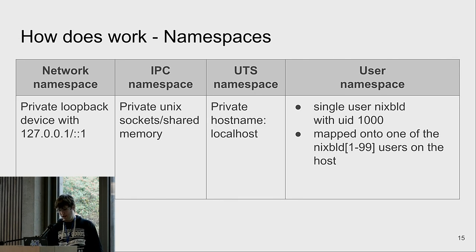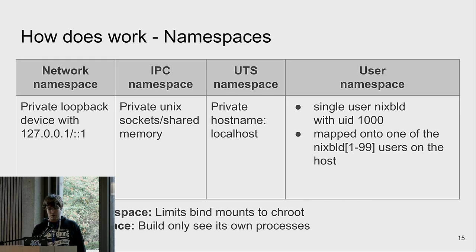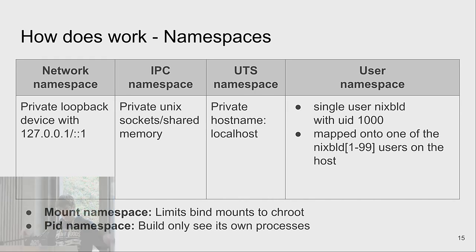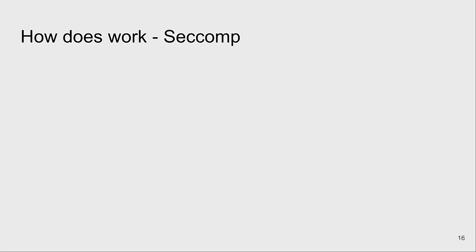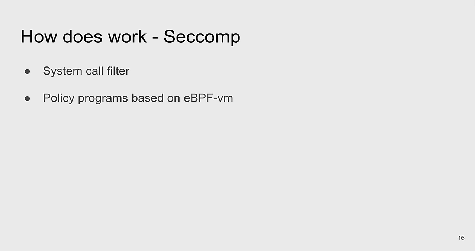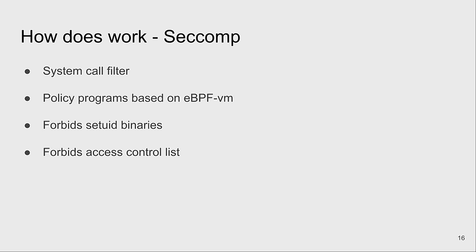Every builder on the host usually has Nix build users numbered one to some number, but inside the sandbox they're all called 'nixbuild' with UID 1000, achieved using the user namespace. Then there are mount namespaces so you don't see mounts from the host, and you also don't see processes running outside the sandbox itself.